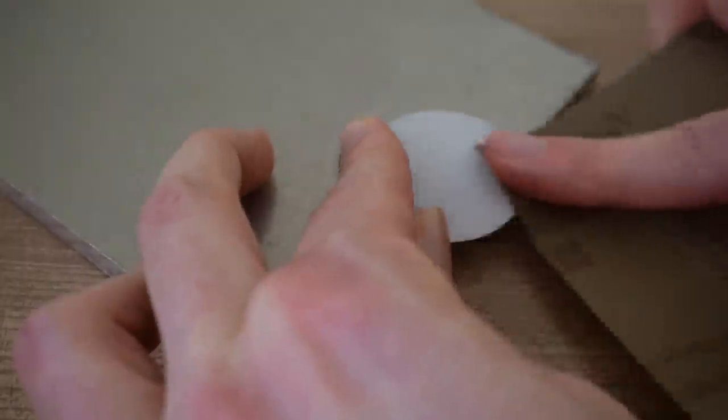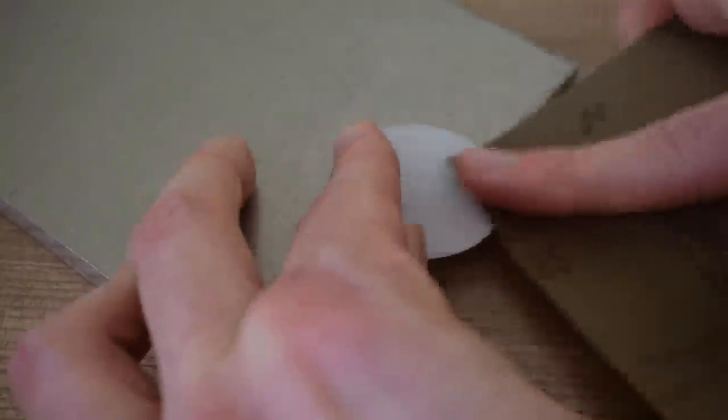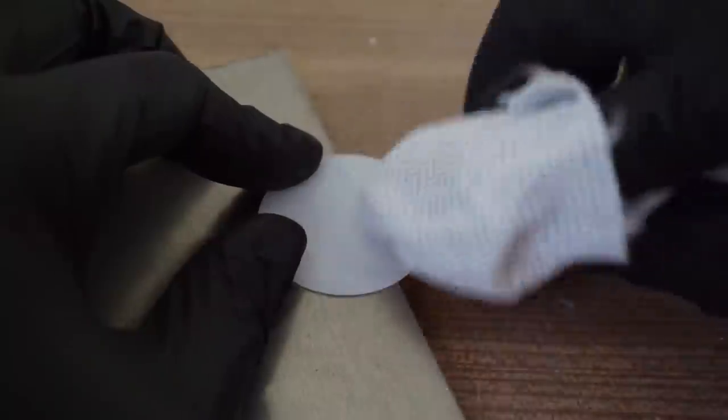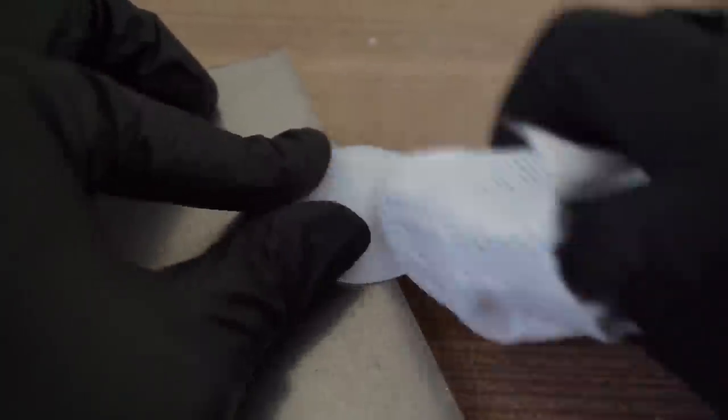Now I am wet sanding in order to get rid of the tool marks. Starting with 400 grit sandpaper and going all the way to 2000 grit. After that I am doing a quick polish and the first lens is finished.